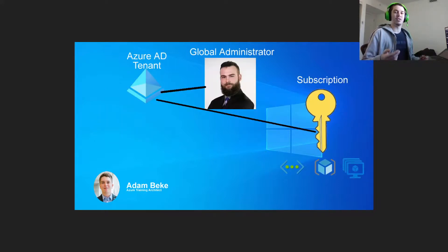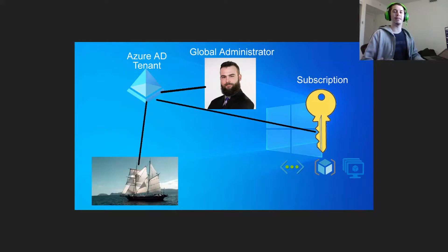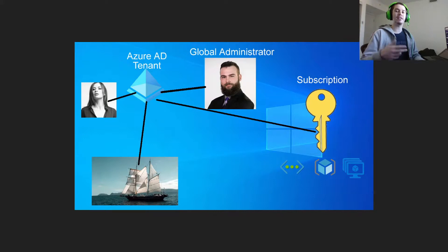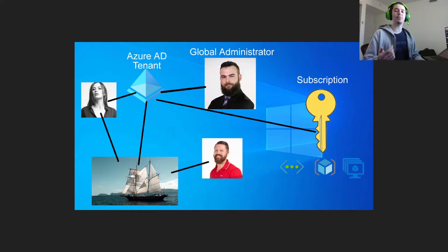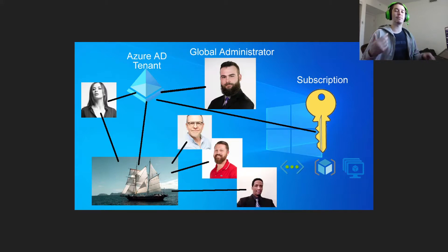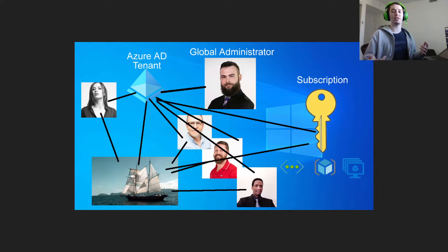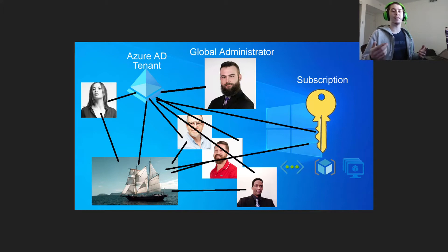Here we have an Azure tenant with Cameron as our global administrator, with a trust relationship established with a subscription that has resources. Using our global admin, we can create groups — like a pirate group — and create users inside our Azure AD tenant. We can assign a pirate user the owner role of the pirate group, add other pirate users as members, and then assign permissions to subscription resources using Azure roles or RBAC roles.